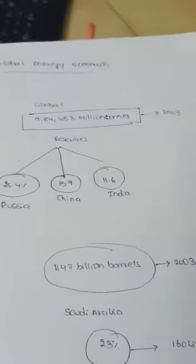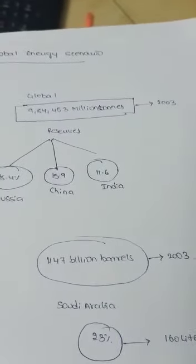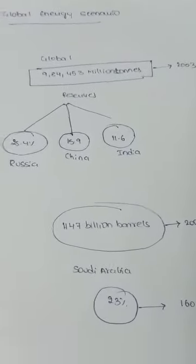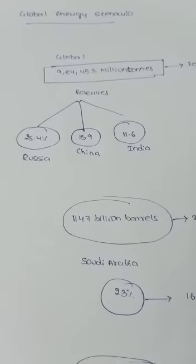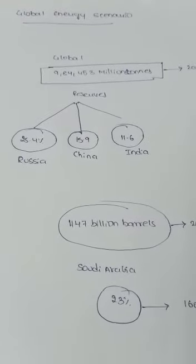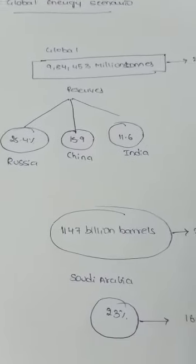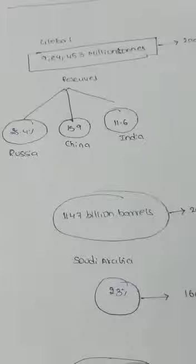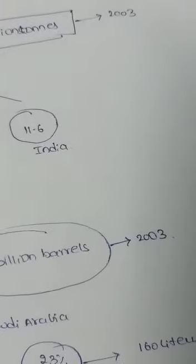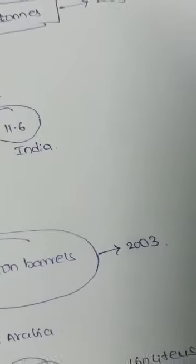Looking at sector-wise energy consumption, agriculture accounts for 5 percent, residential 10 percent, transport 22 percent, and industrial 49 percent. These are the sector-wise energy consumption figures observed from 1999 to 2003.